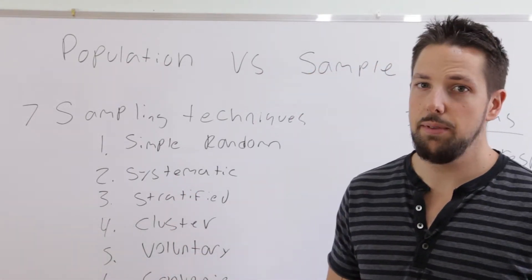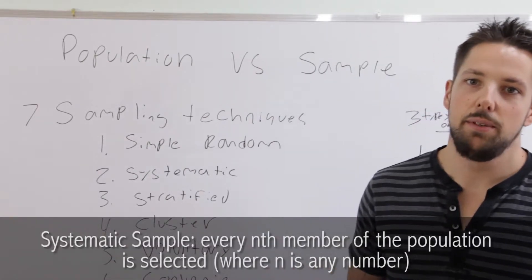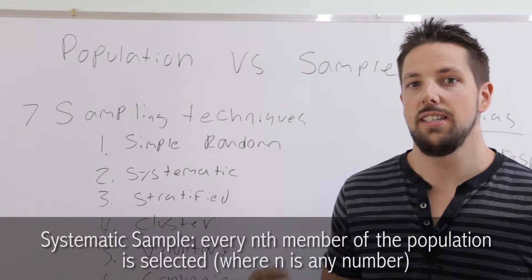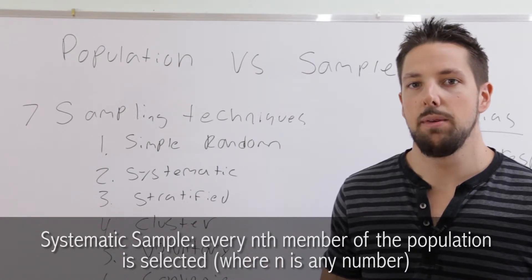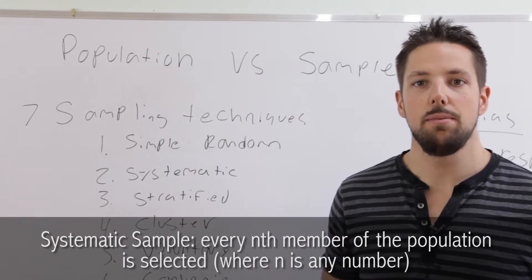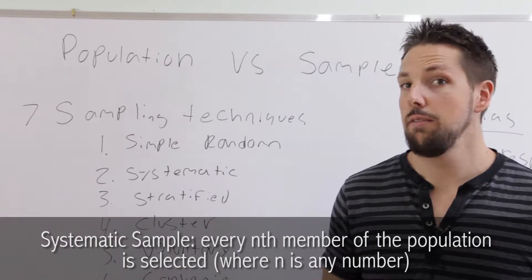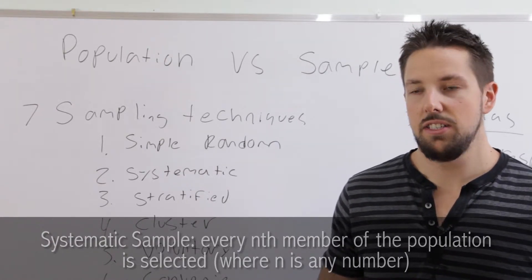The next type of sampling technique is called a systematic sample. A systematic sample is when every nth member of a population is selected, where n is any number. If you have a list of names and pick every 20th person, that's a systematic sample. Or every 6th person, systematic sample.